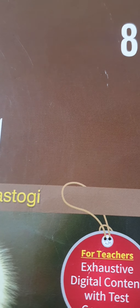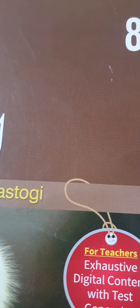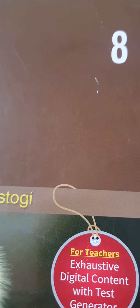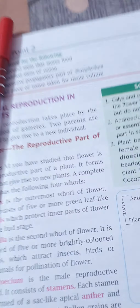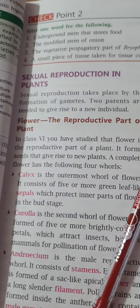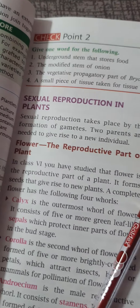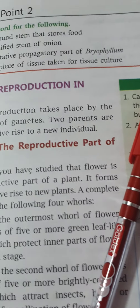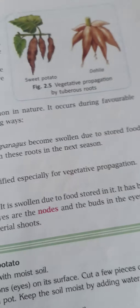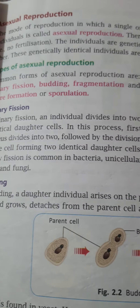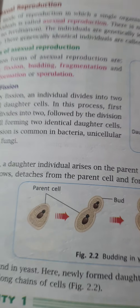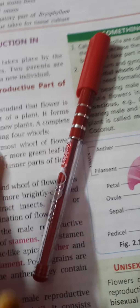Good morning students. I, Rashmi ma'am, am back with your online session for Class 8 Biology. Today we are going to start our next topic of Chapter 2, that is sexual reproduction in plants. We have completed asexual reproduction in plants, which was described in many different types and ways. Now we are going to start sexual reproduction in plants.